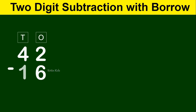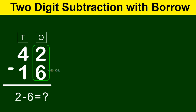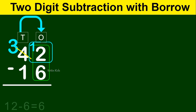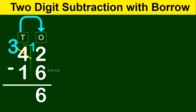Let's see one more example: 42 minus 16. We have 2 and 6 on the ones position. Can we subtract 6 from 2? No. So let's borrow from the tens position. We borrow 1, so this number becomes 12, and 4 becomes 3. 12 minus 6 gives us 6. At the tens position, it is 3 minus 1, which gives us 2. So 42 minus 16 gives us 26.